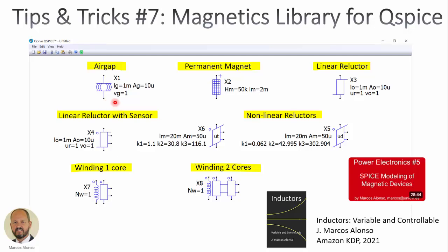Here we have the different symbols for the air gap, the permanent magnet, a linear reluctor, a linear reluctor with a sensor for the magnetic flux density, and two non-linear reluctors — one with the total permeability and the other with the differential permeability for small signal analysis. Finally, we have two windings: a winding with one core and a winding embracing two cores.